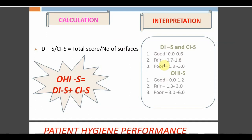OHI-S categories for DI-S and CI-S: Good = 0 to 0.6; Fair = 0.7 to 1.8; Poor = 1.9 to 3. OHI-S overall: Good = 0 to 1.2; Fair = 1.3 to 3.0; Poor = 3.1 to 6.0. These categories do not apply to OHI — they are specific to OHI-S. OHI-S is very easy to apply to patients or large groups and is the preferred index for conducting oral hygiene surveys because it checks only six surfaces rather than all 64 surfaces of the full OHI.